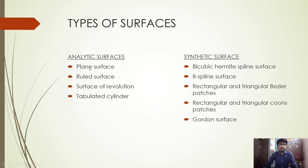In analytic surfaces we have four different types: plane surface, ruled surface, surface of revolution, and tabulated cylinder. In synthetic surfaces we have Bezier surface, B-spline surface, Coons surface, and Gordon surface, among others. We will see some of these surfaces in the next slides.